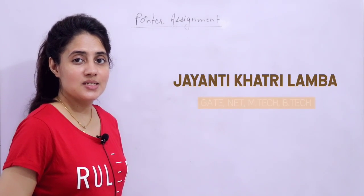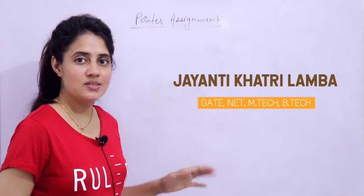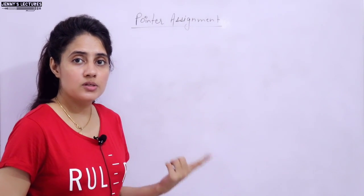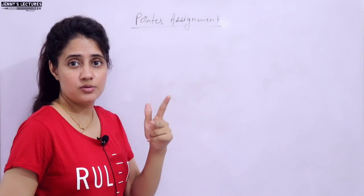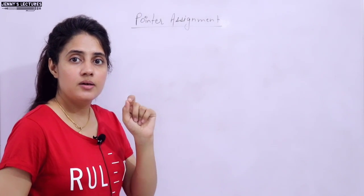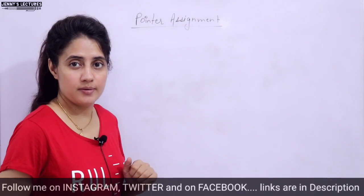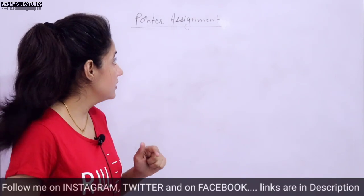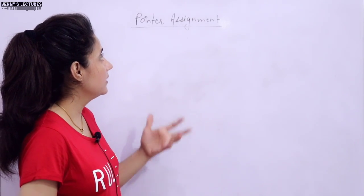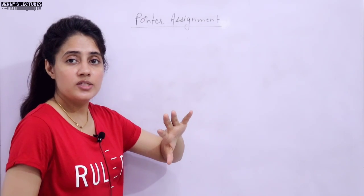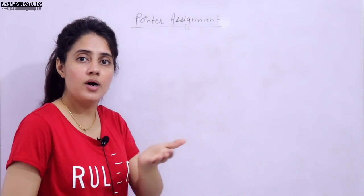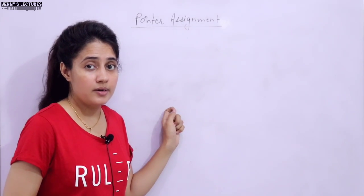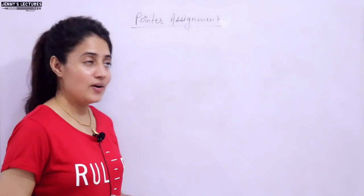In this series on learning C programming, we are discussing pointers. We have covered basics like what a pointer is, declaration, initialization, and operators such as the address-of operator and indirection (dereferencing) operator with proper examples. In this video, I'll talk about one more thing: pointer assignment — how to assign the value of one pointer to another pointer — with an example and a practical demo.